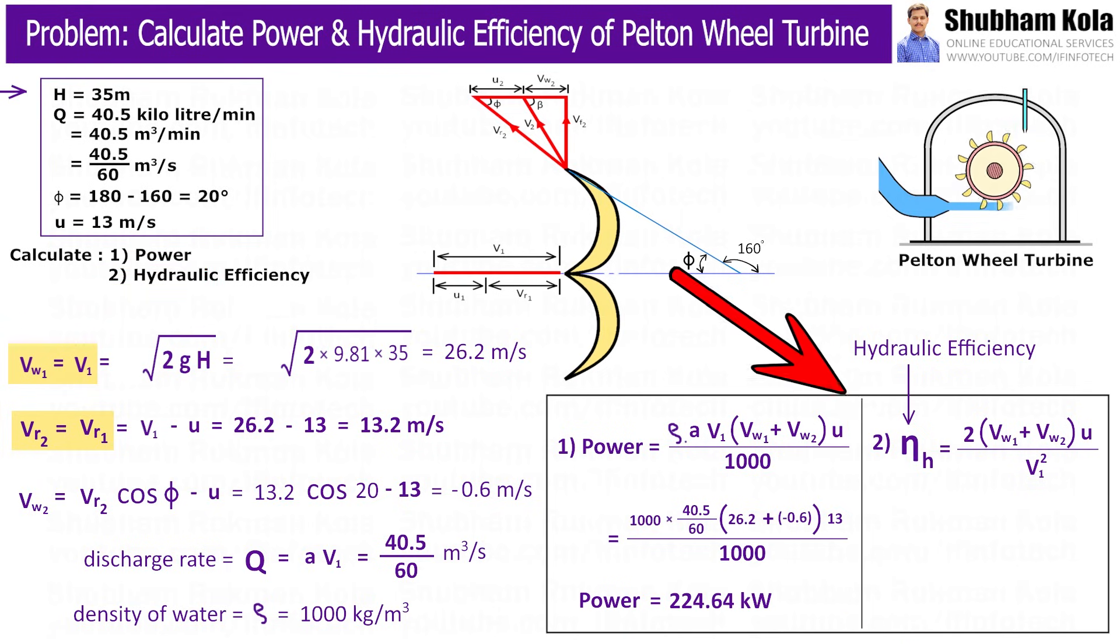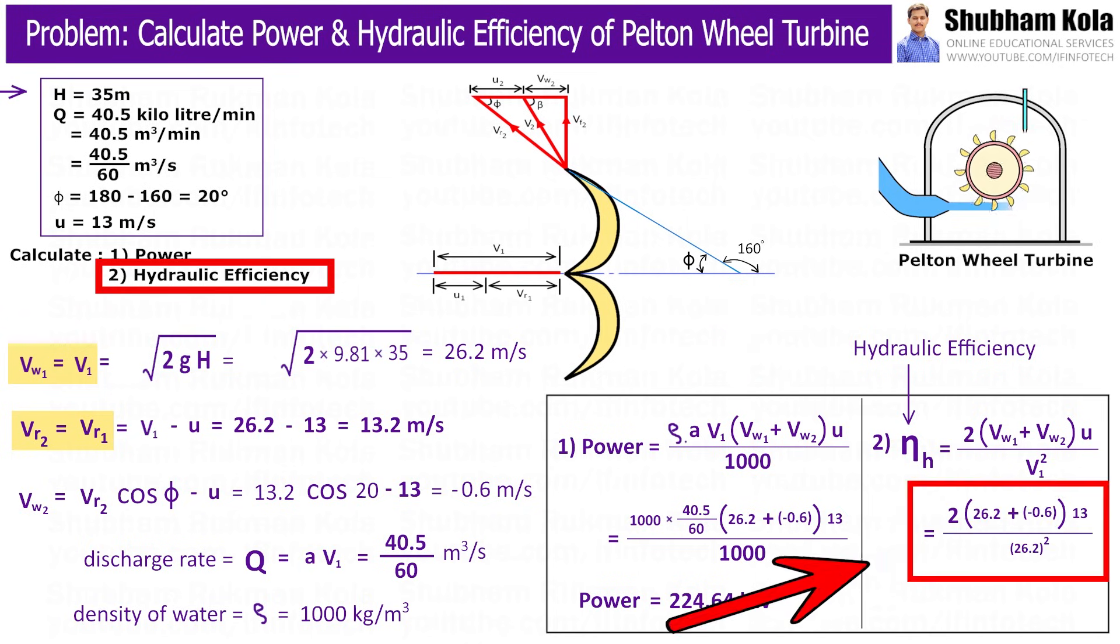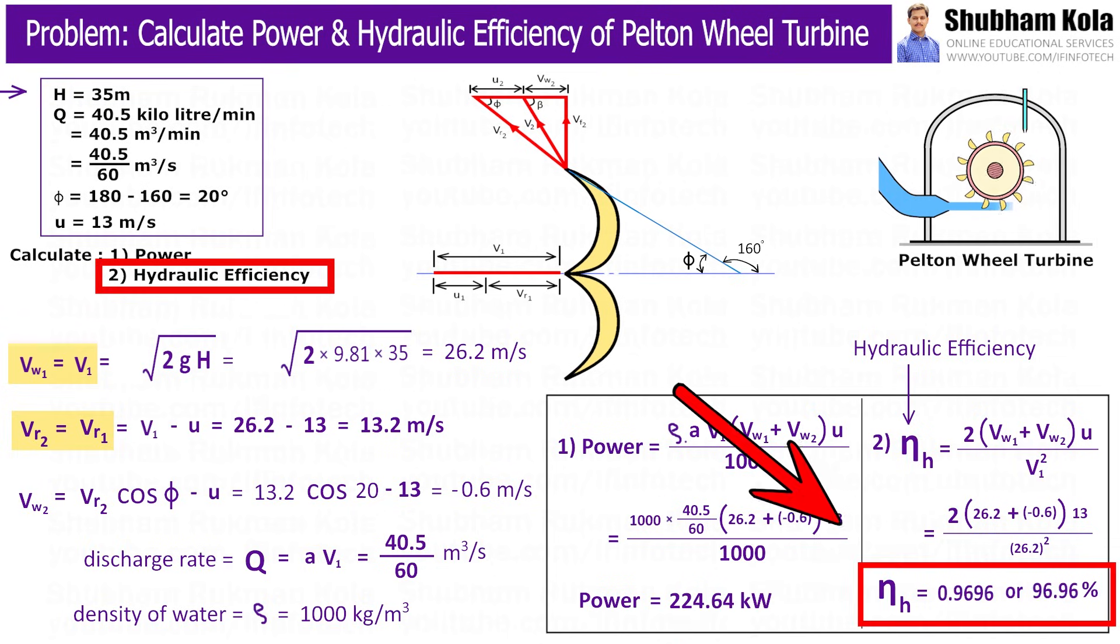Next, we want to calculate hydraulic efficiency of Pelton wheel turbine. And here is the formula. So, we already have all these values. Therefore, by calculating this, we'll get hydraulic efficiency 0.9696 or 96.96%.